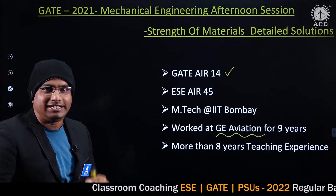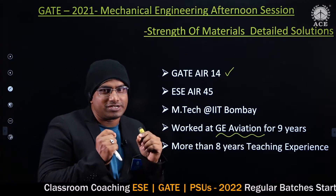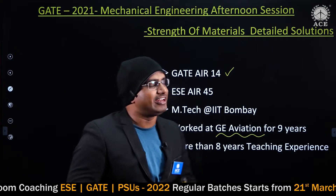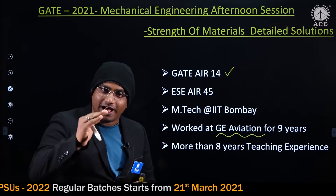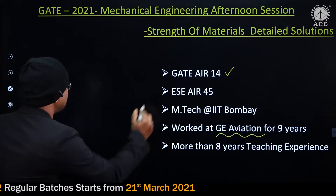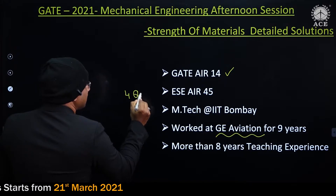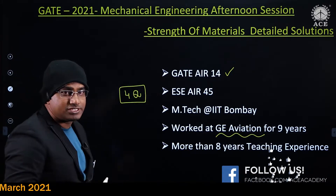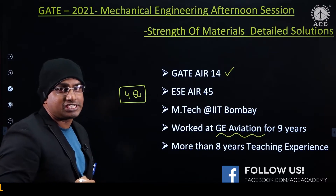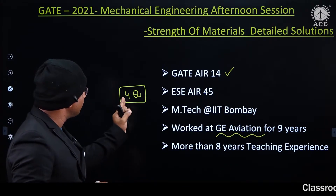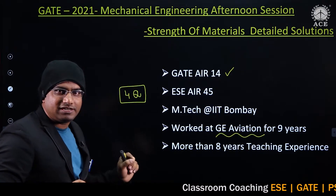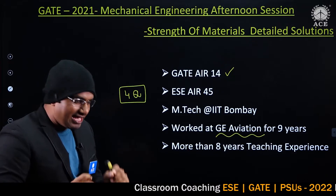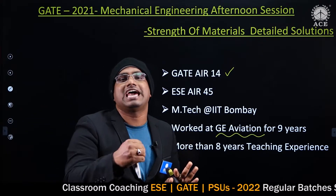In today's video we will discuss detailed solutions of Strength of Materials questions given in GATE 2021 Mechanical Engineering afternoon session. There are four questions given in the Strength of Materials afternoon session, and in the forenoon session they gave five questions. I proudly say that every question can be answered easily with our classroom notes or with the help of our ACE Academy deep learn videos.